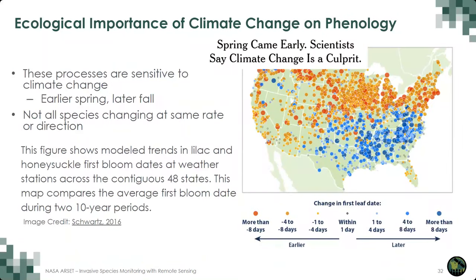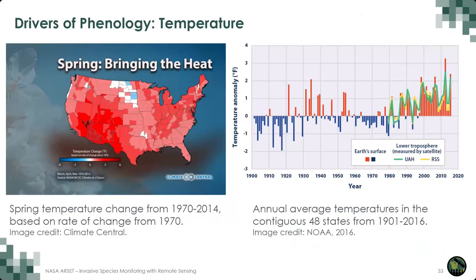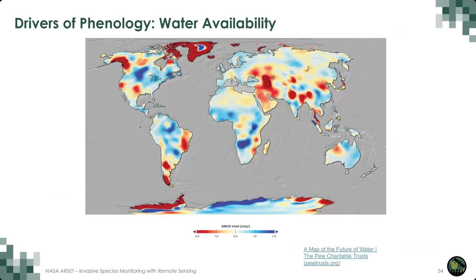Phenological events are sensitive to climate change, and not all species change at the same rate or direction. This figure shows model trends in lilac and honeysuckle first bloom dates at weather stations across the 48 states, comparing the average first bloom date during two 10-year periods. One driver of phenology is temperature, shown here as a trend in increasing temperature for the U.S. Another driver is water availability, which is changing across the globe, made visible here using NASA's GRACE data.